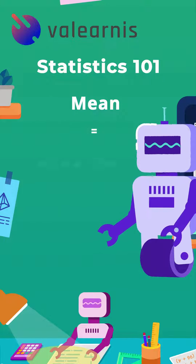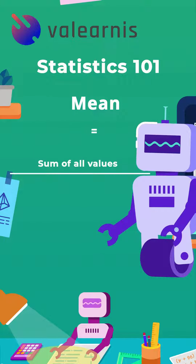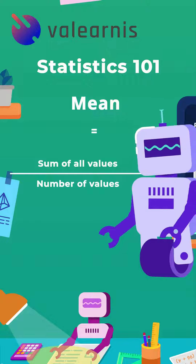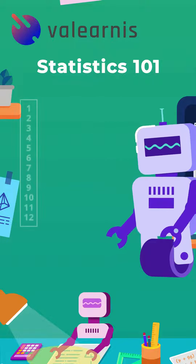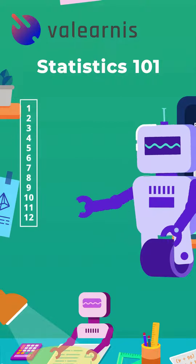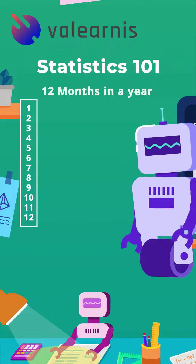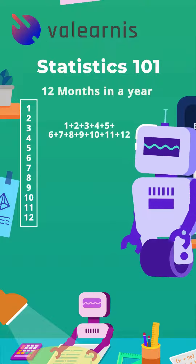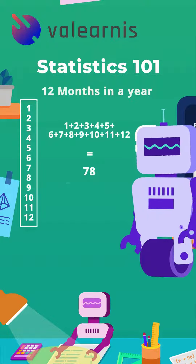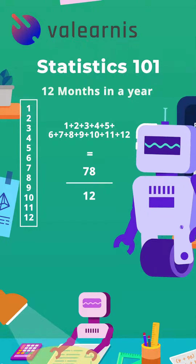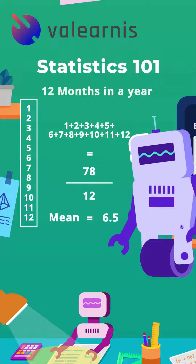The mean of a data set is the sum of all the values in the data set divided by the total number of values. For example, if you have the numbers 1 through 12 in a list, like the 12 months in a year, we can add up those values to get 78 and divide that by 12 to get a mean of 6.5.